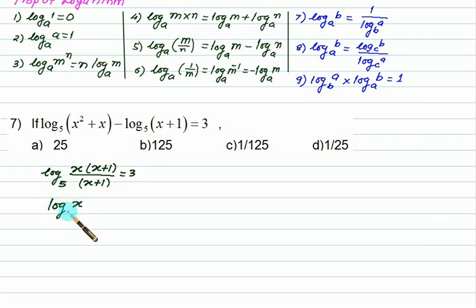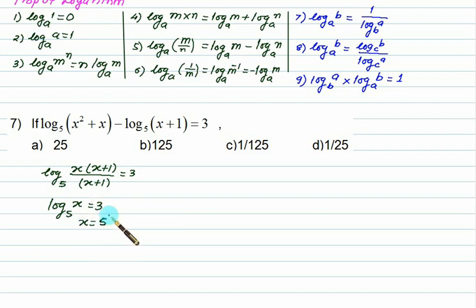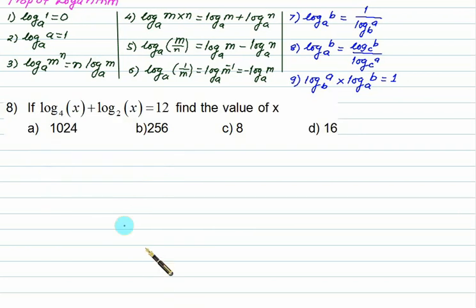We are left with log of x to the base 5 equals 3, so x equals 5 cubed, which is 125. Choice B is correct. Next, we are given log of x to the base 4 plus log of x to the base 2 equals 12, which presents a base conversion problem.